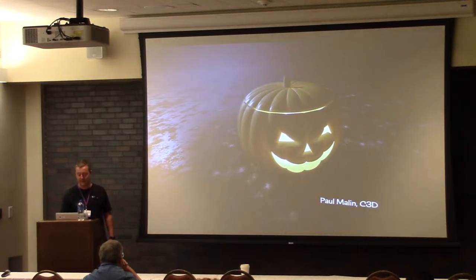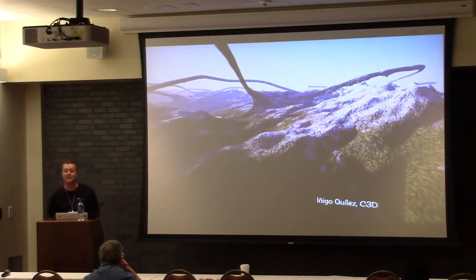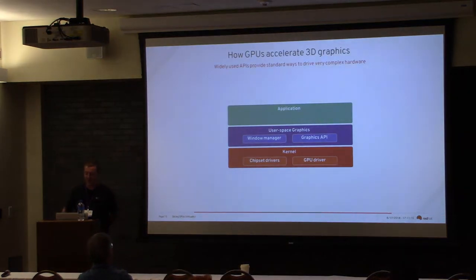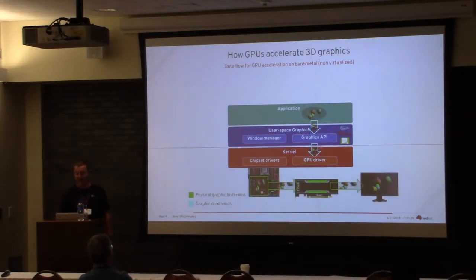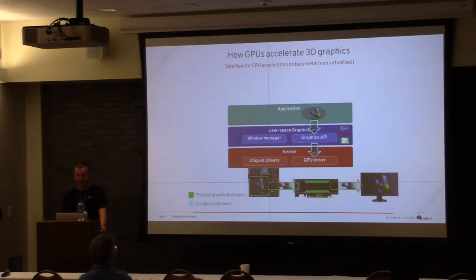So how does it actually work inside? The first level at the top, the application, is going to call an API. There are a number of graphics APIs like OpenGL, Vulkan, etc. That's going to go through a GPU driver, which sends that in some proprietary format — what I call the graphics bit stream — on the chip, through the chipset driver in Linux, in the kernel. And some graphics card is going to render that in a frame buffer, and then the frame buffer is going to be converted to a digital signal that goes to your screen.